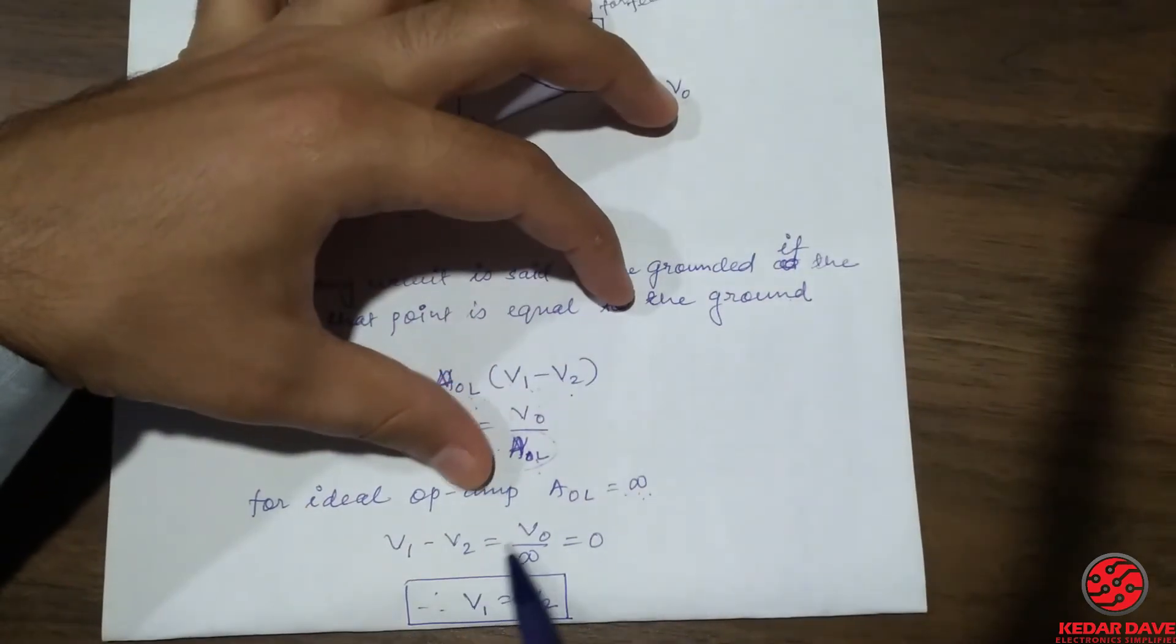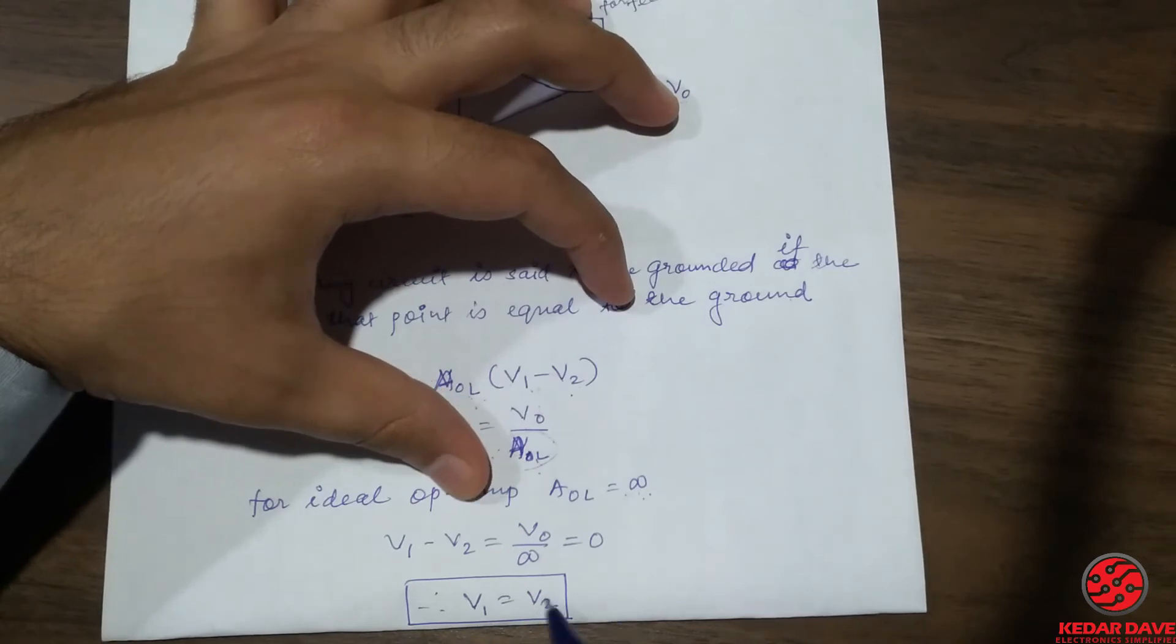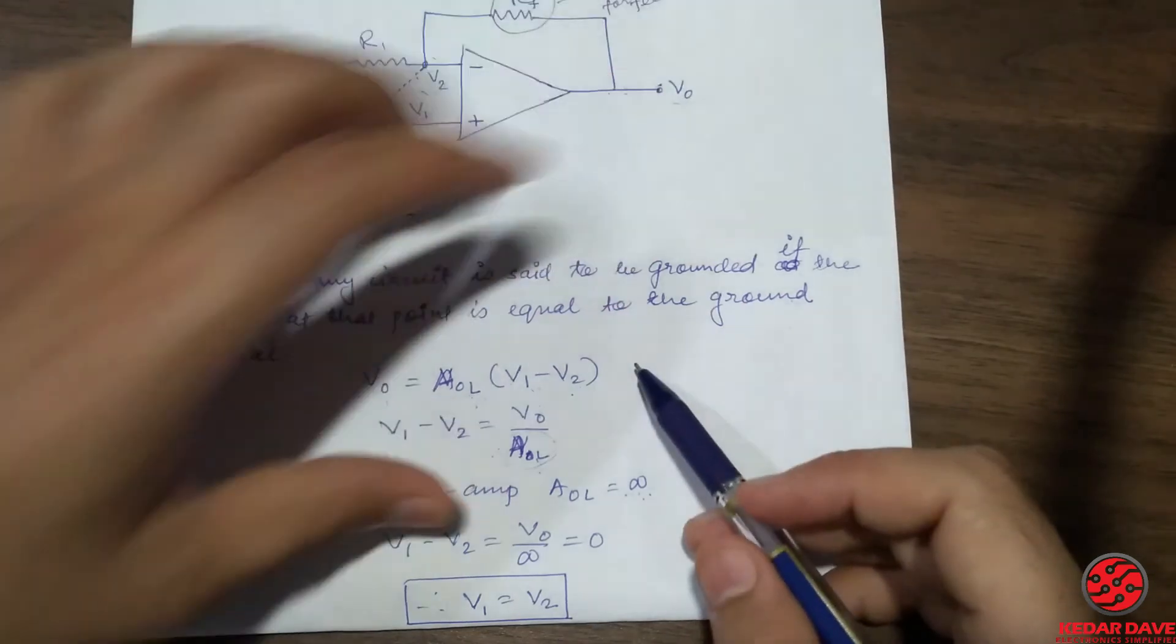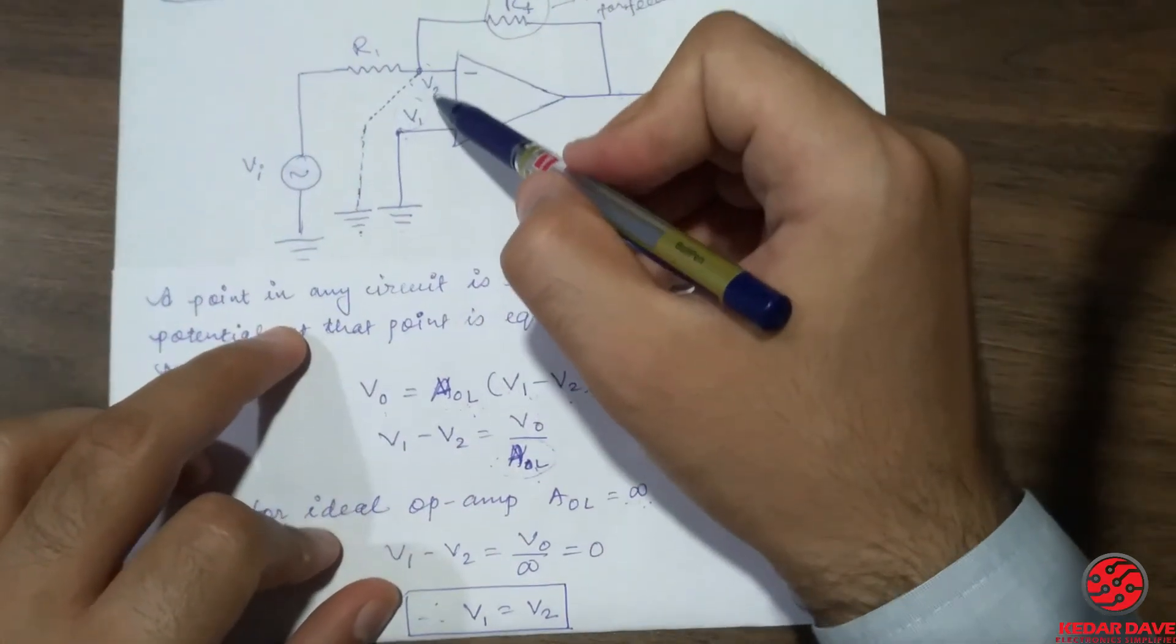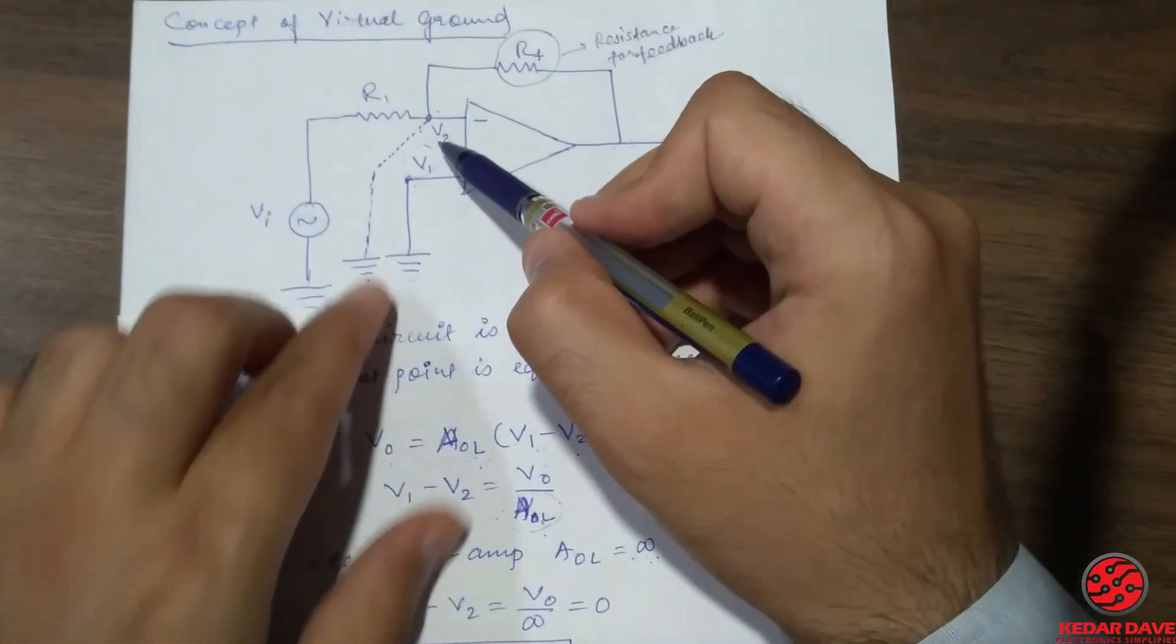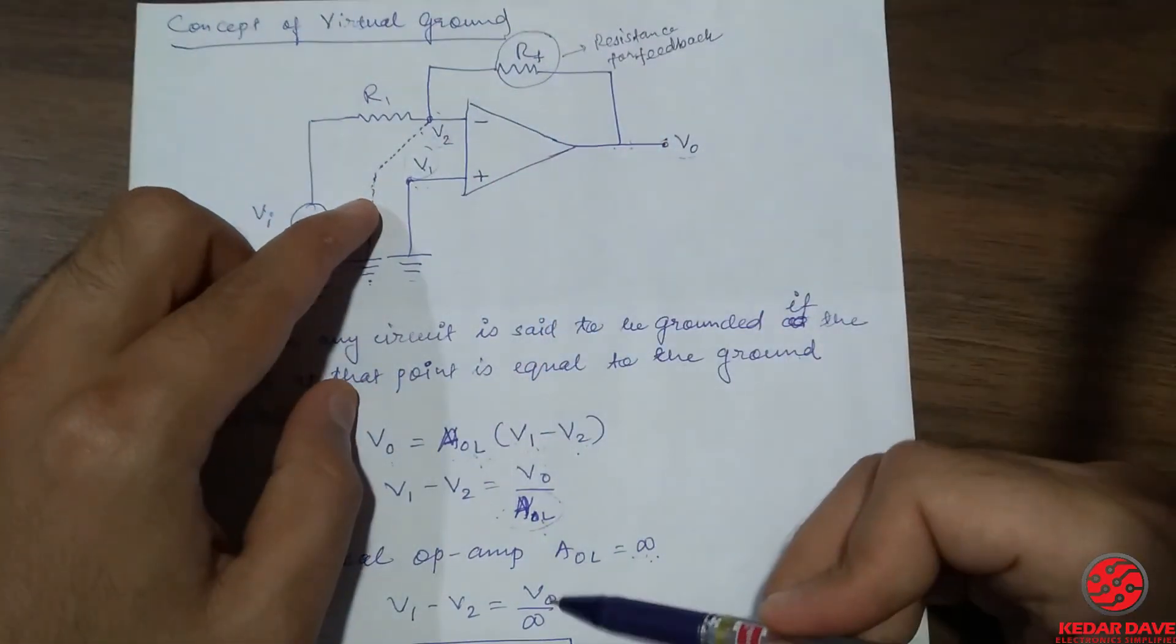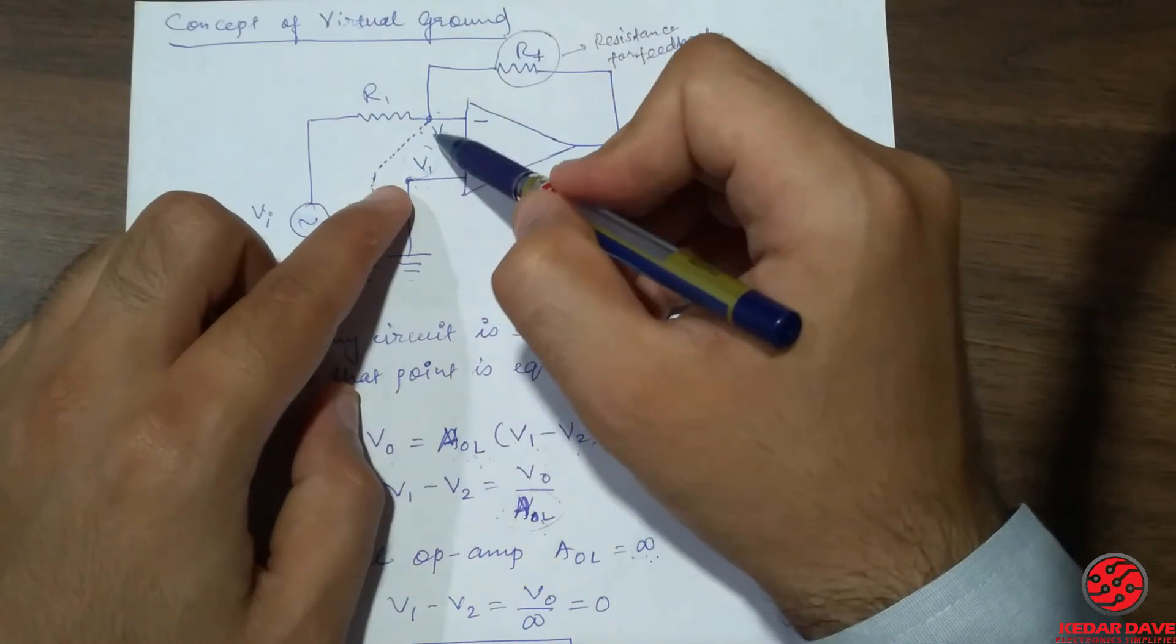So what we are doing is we are putting the open loop gain as infinite and you can see the result is that V1 equals V2, and hence the condition is satisfied that the concept of virtual ground is being satisfied by this circuit by this equation derivation.